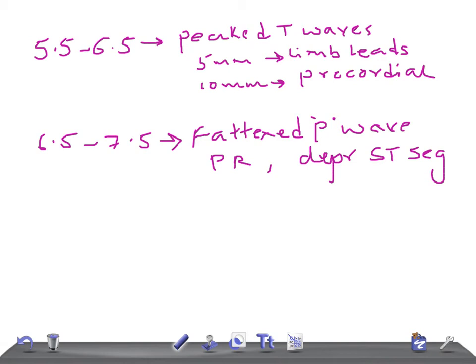These are the changes that take place if the potassium level is 6.5 to 7.5. Let's move on to the next thing. If the levels are 7.5, a bit higher at 8.5, the only EKG change you can expect is QRS prolongation.